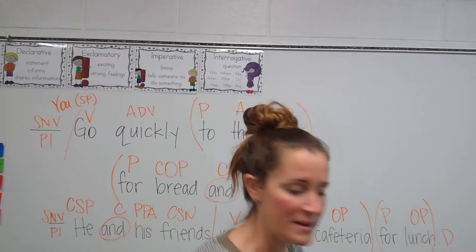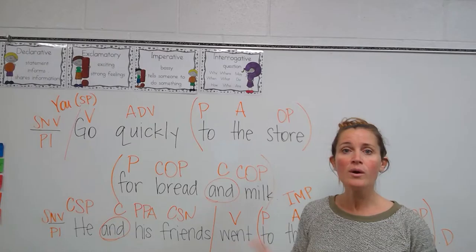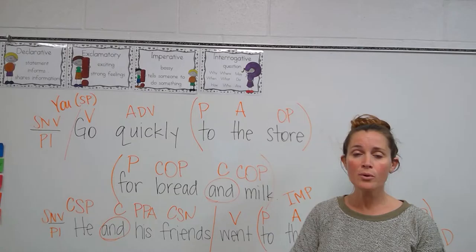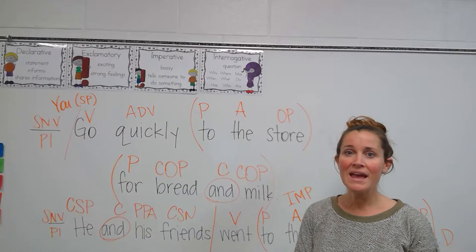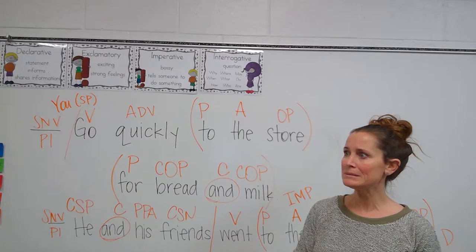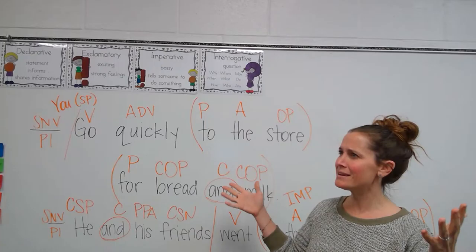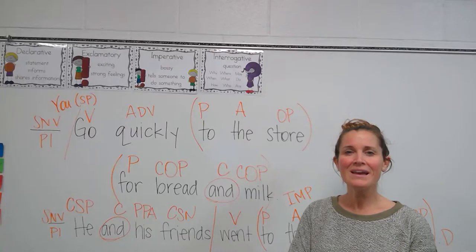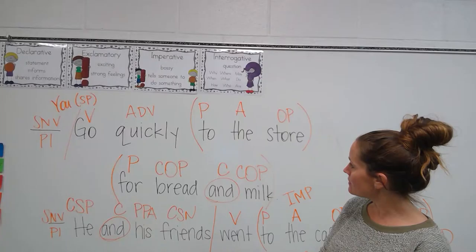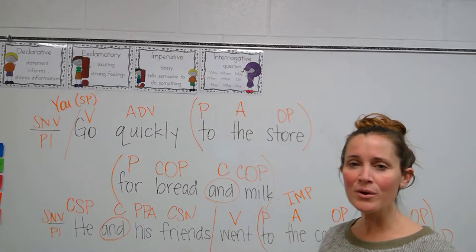Now we're going to move on to our labels. We should know our seven labels so far: subject noun, verb, pronoun, preposition, adjective, adverb, and — what am I missing — the conjunction. So: subject noun, verb, adverb, adjective, preposition, conjunction, and there we go.